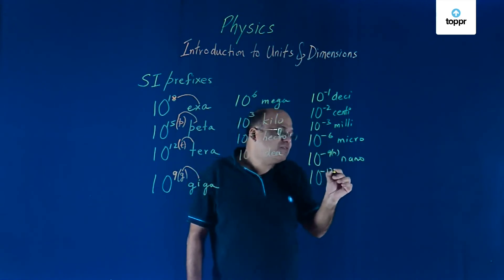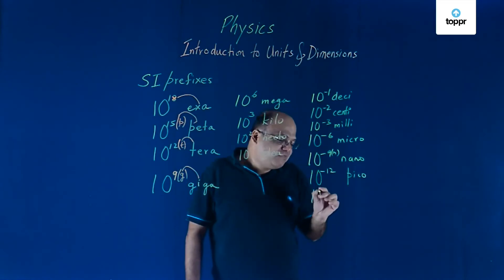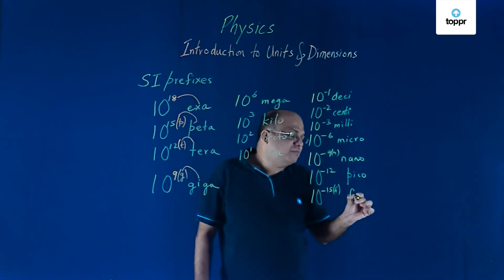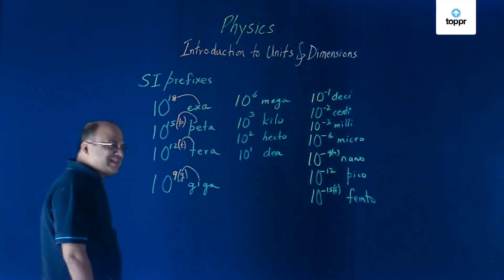Minus 12 is called PICO. Minus 15, F should remind us of femto. 15 starts with F, femto also starts with F.